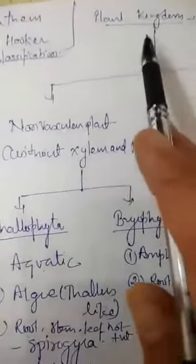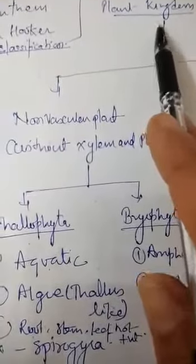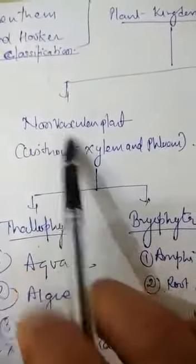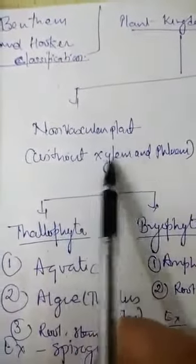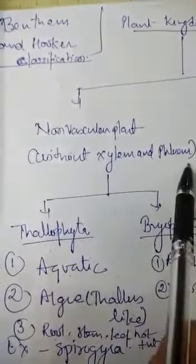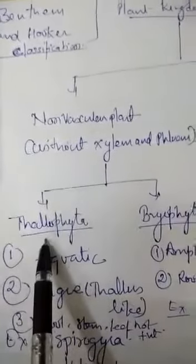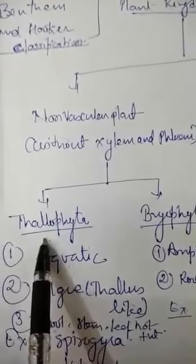Good morning children. Yesterday we had started with the plant kingdom. The first class of the plant kingdom is the non-vascular plants, meaning they are without xylem and phloem. The first class of the non-vascular plants is Thallophyta.